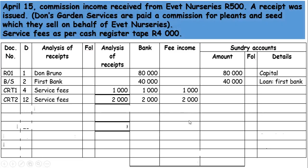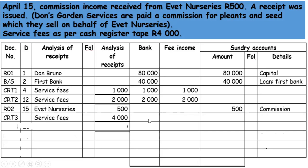On page 55, the 15th of April, there are two transactions. The first is commission received from Vet Necessary amounting to 500 rand — receipt number two is issued. The date is the 15th, Vet Necessary. We receive cash but it's not yet banked since we bank everything at once, so this goes to sundry accounts as 'commission'. The second transaction on the 15th is fee income — CRT3 is issued, same date. Service fees amount to 4,000 rand. We add it together with the commission and deposit 4,500 rand total at once. The 4,000 is part of fee income.